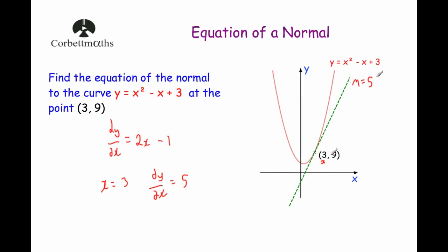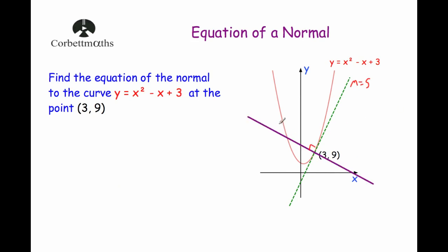Now that we know the gradient of the tangent is equal to 5, we can find the gradient of the normal really easily. The normal is the line that crosses the tangent at 90 degrees — it's the perpendicular line to the tangent passing through the point (3, 9). Since they're perpendicular, the gradient of the normal is the negative reciprocal: if the tangent gradient is m, the normal gradient is minus 1 over m — that's minus 1 fifth. So we're going to use y equals mx plus c, and we write y equals minus 1 fifth x plus c.